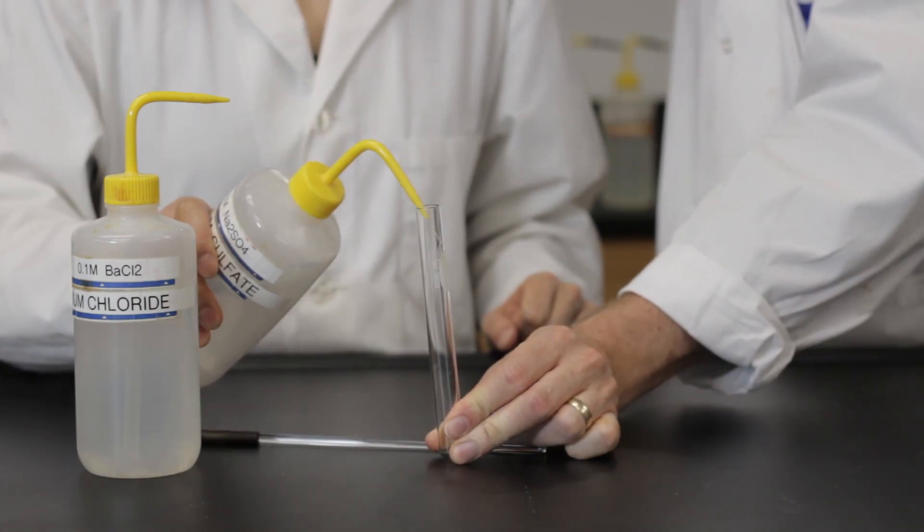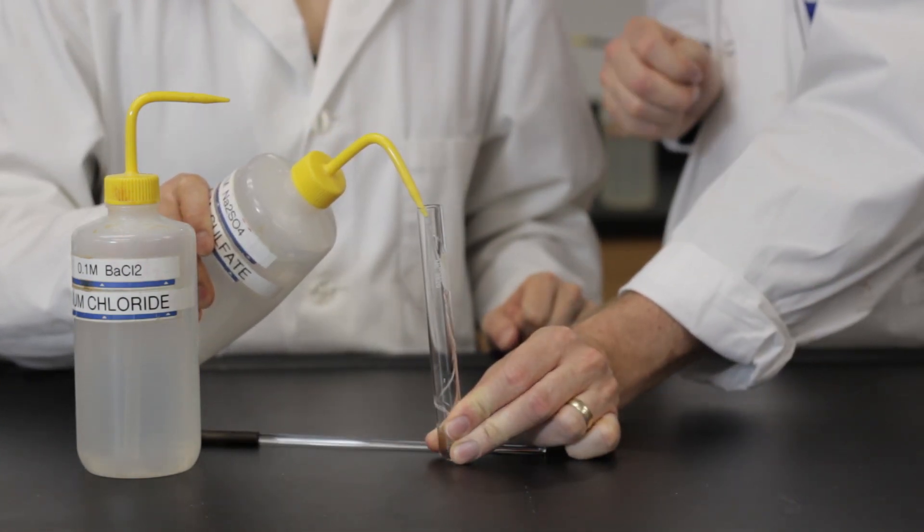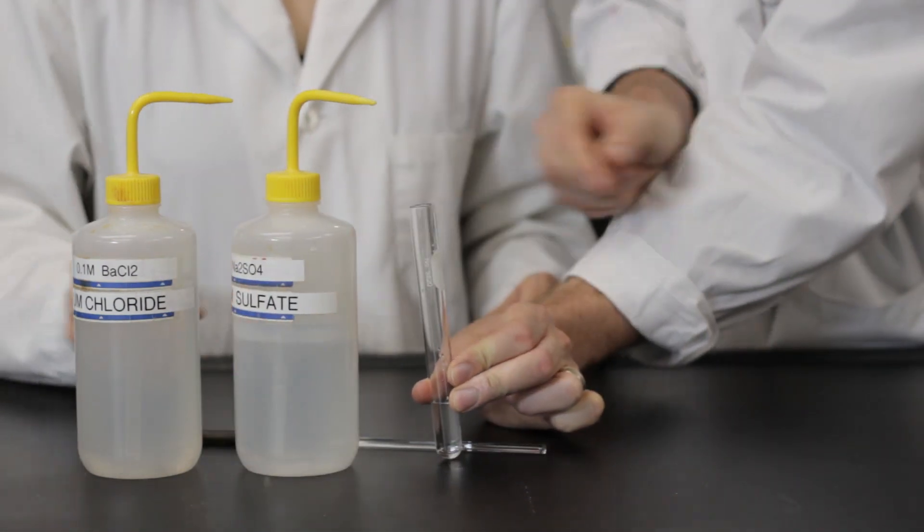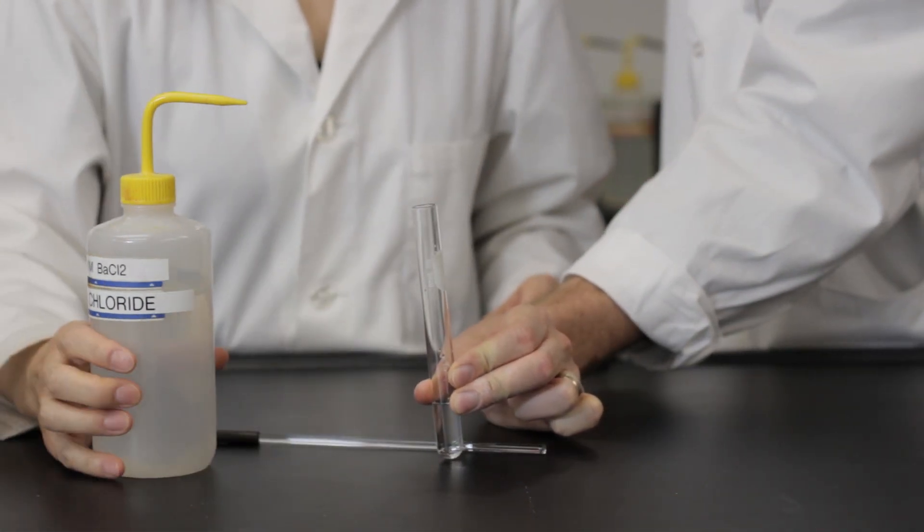For double replacement reactions, in the test tube, mix 2 milliliters of each solution. Again, you can use your fingers to measure the volume.